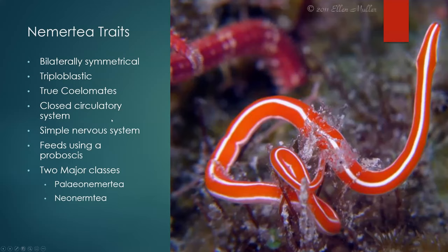They possess a closed circulatory system with a simple nervous system. The main defining trait — their main monophyletic trait — is that they feed using a proboscis, which is a tube that they invert in order to attach to prey. Depending on how this proboscis is structured, it will define whether the organism belongs to one of two different classes: the Palaeonemertea or the Neonemertea.